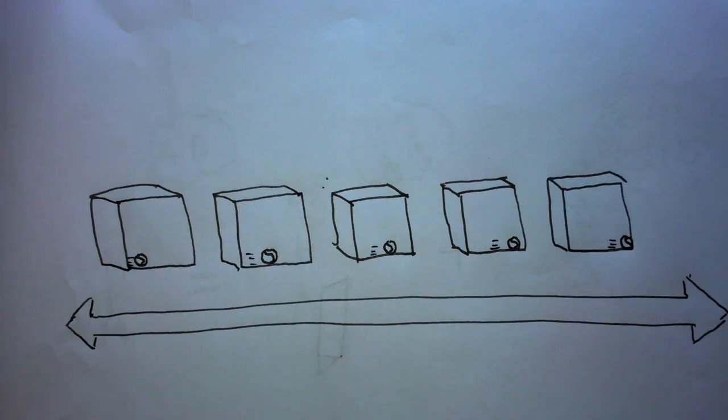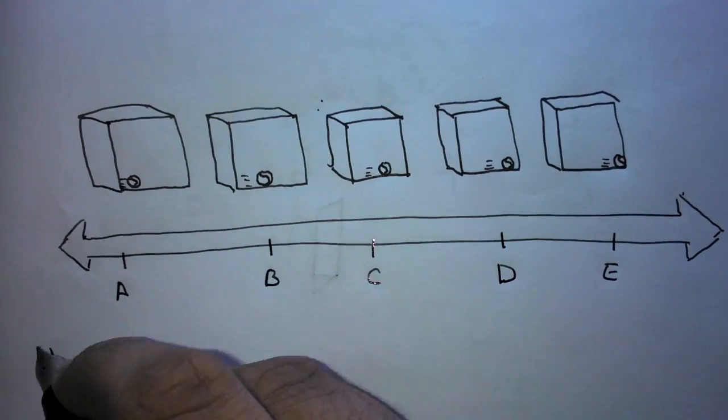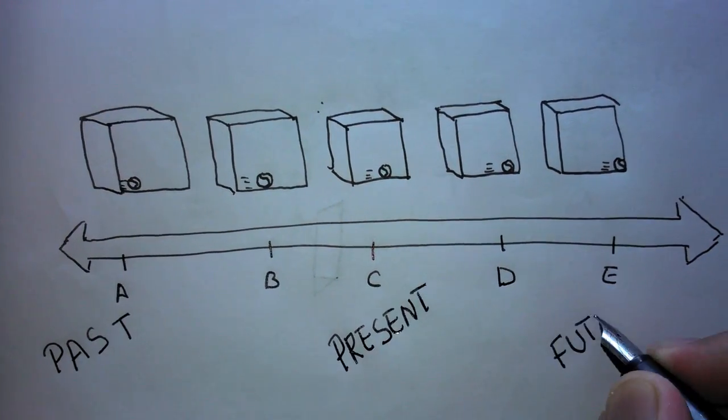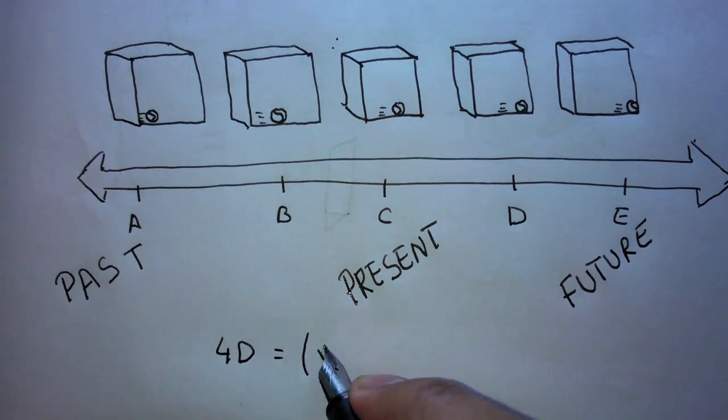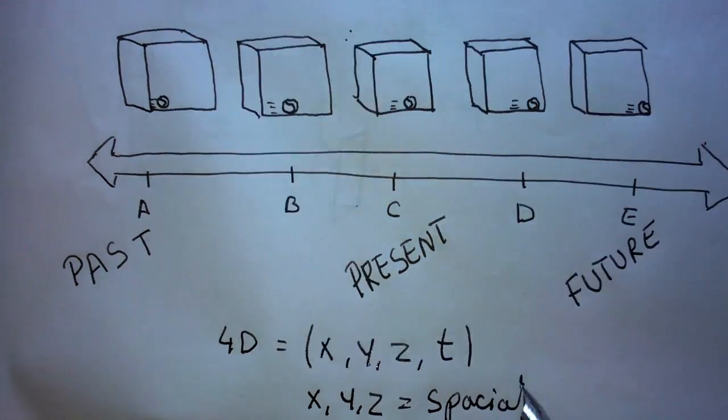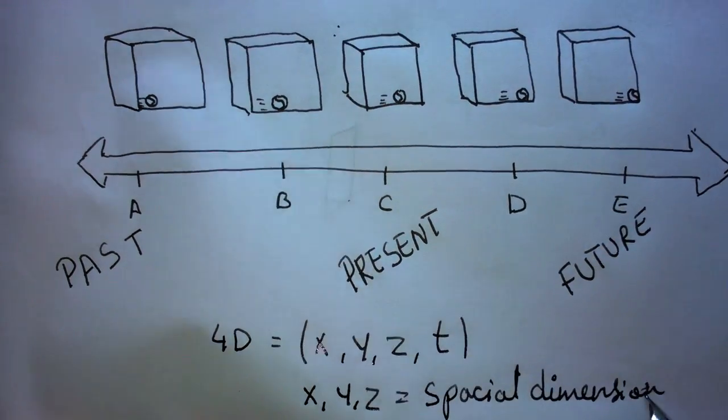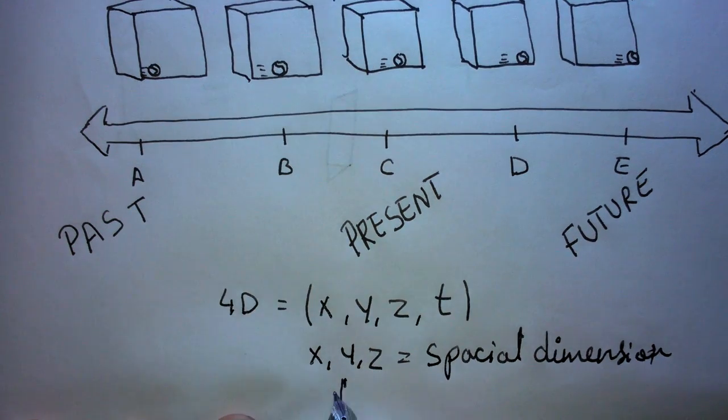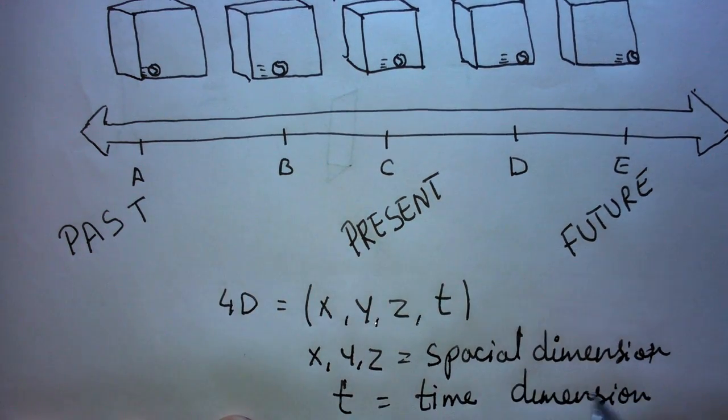The middle frame will be the origin. The left will be the negative axis while the right will be the positive axis. The four dimension has four coordinates. The x, y, z and t. Here x, y, z are the spatial dimension, which represent the position of the body. The t is the time dimension, which represents the point of the point of time.